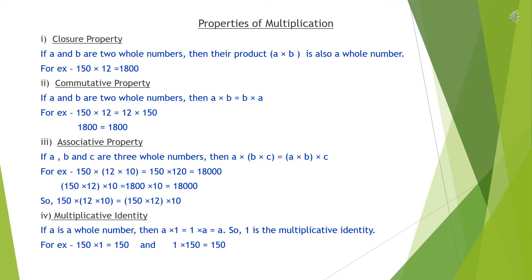Third, associative property. If a, b, and c are three whole numbers, then a multiplied by (b multiplied by c) equals (a multiplied by b) multiplied by c. In this property, we only change the sequence of the brackets and get the same product. For example, 150 multiplied by (12 multiplied by 10) equals 150 multiplied by 120, which equals 18,000. Secondly, (150 multiplied by 12) multiplied by 10 equals 1800 multiplied by 10, which equals 18,000. From both sequences of brackets, we get the same product.